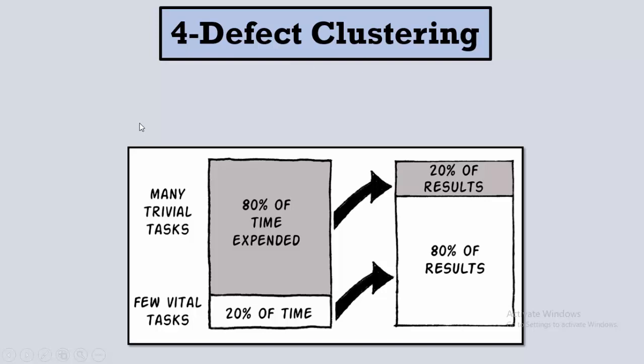The fourth principle is defect clustering. We have a principle in economics called the Pareto chart. This principle states that 80 percent of the problems are caused by 20 percent of the causes. So 80 percent of the time you spend trying to find defects will solve only 20 percent of the defects, and 20 percent of the time you spend on testing will find 80 percent of the bugs.